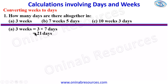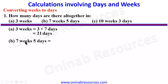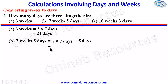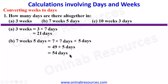So in 3 weeks, we have 21 days. For B, 7 weeks 5 days: we convert these 7 weeks to days by multiplying by 7, since there are 7 days in a week. So 7 weeks will be 7 times 7 days, then we add the 5 days. So 7 times 7 is 49 plus 5 days. 49 plus 5 days gives 54 days. Therefore, 7 weeks 5 days is 54 days.